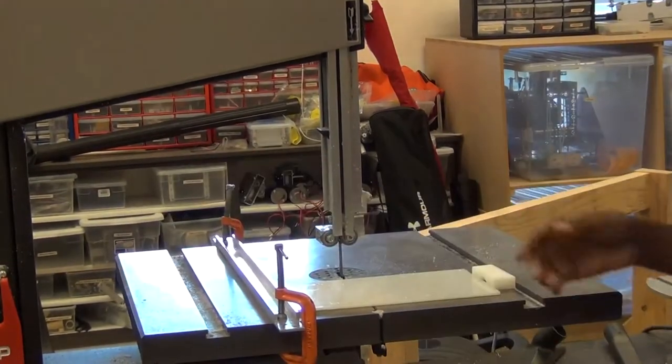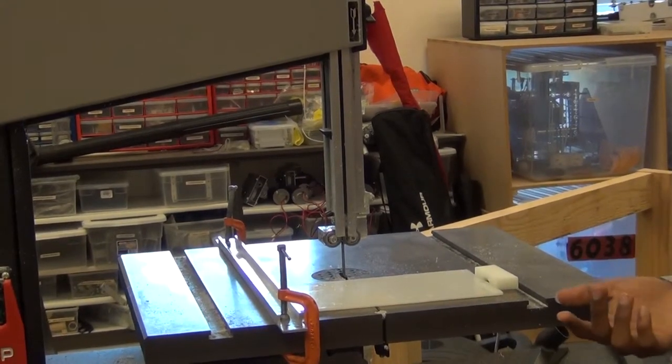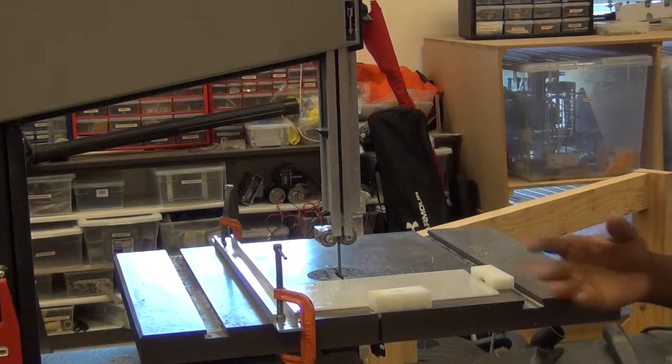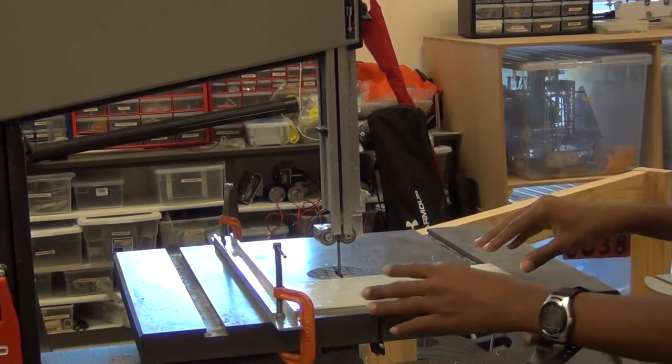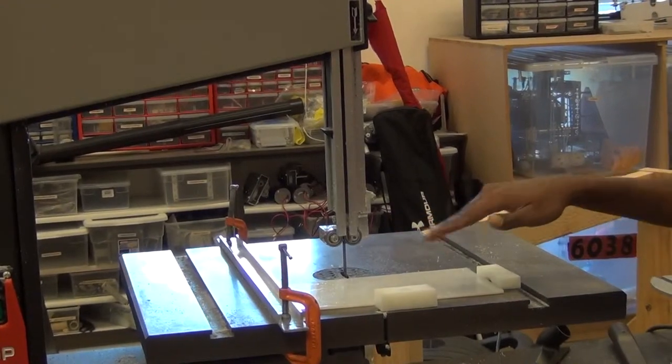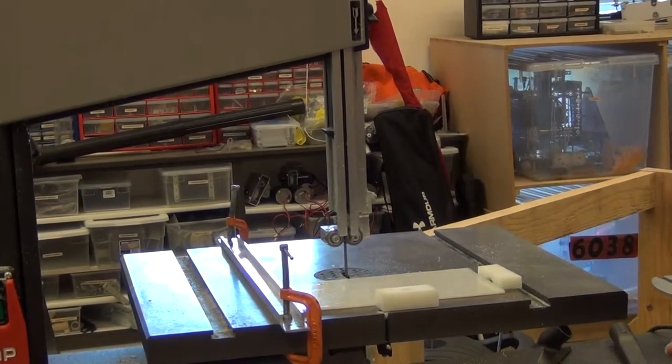So whenever you're pushing a piece of plastic aluminum or polycarbonate through the blade, you always want to make sure that you're not holding the piece that you're cutting, because if you're holding the piece then you're relying on friction and if your hand slips it can go through the blade and you don't want to lose any fingers.